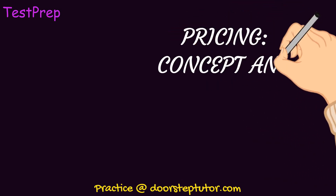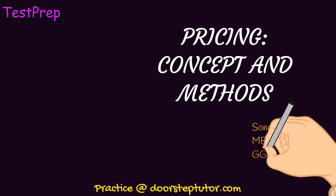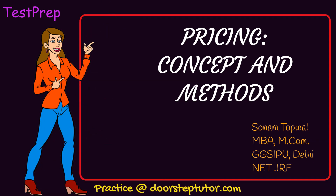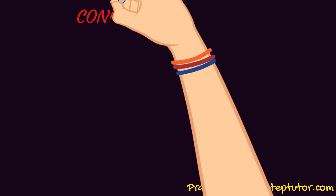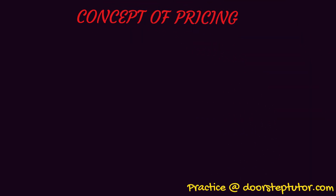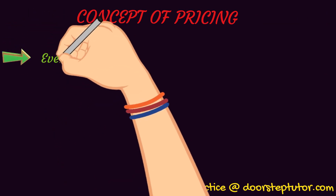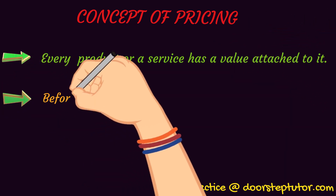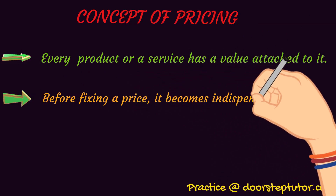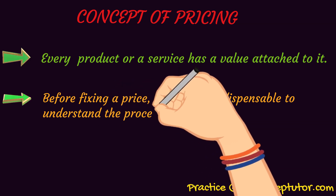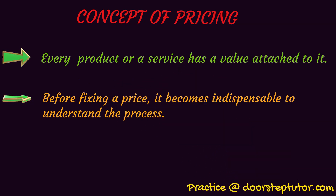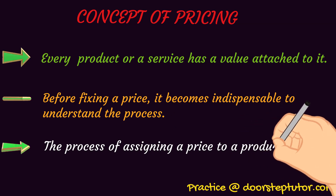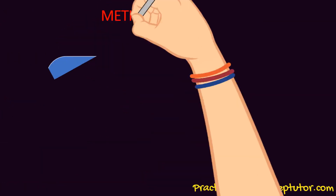Hi everyone, today we are going to discuss the basic meaning or concept of pricing, and further we are going to discuss in detail the various methods used for pricing. Now let us understand the basic concept of pricing. We all know every product has a certain value attached to it. Before fixing up a price for a product, an organization has to follow certain steps. Pricing is basically the process of assigning a value to a product.